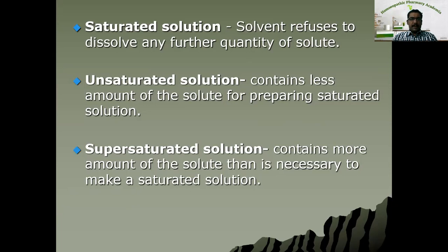This can be experimentally proven. When you dissolve sugar in water at a particular concentration, the sugar may not dissolve anymore — it becomes saturated. That particular state is called a saturated solution. Next is unsaturated solution, which contains less amount of solute than required to prepare a saturated solution — it is just before the stage of saturation, where there is still more space for solute to dissolve in the solvent. Such solutions are called unsaturated solutions.